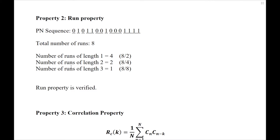Moving on to the number of runs of length 2: we have 2 runs, and the property says one fourth of the runs are of length 2, which is 8 divided by 4 equals 2. So this condition is also verified. The number of runs of length 3 should be one eighth of the total, which is 1, and when we check the sequence we have only 1 run of length 3 — verified. I should not verify for length 4 because that would require one sixteenth of 8, and our sequence is only 15 bits. Therefore, that condition need not be tested, and we can say the sequence verifies the run property.